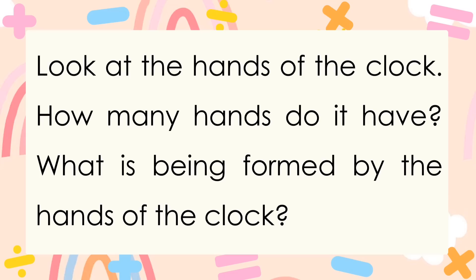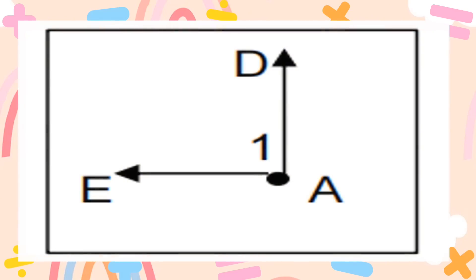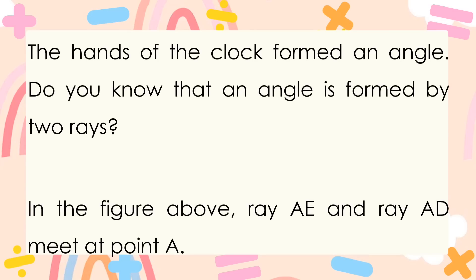Look at the hands of the clock — how many hands does it have, and what is being formed by the hands of the clock? For example, Meline's clock at around 9 o'clock — we have angle DEA or DAE. The hands of the clock formed an angle. An angle is formed by two rays: ray AE and ray AD meet at point A, so the common point is point A.